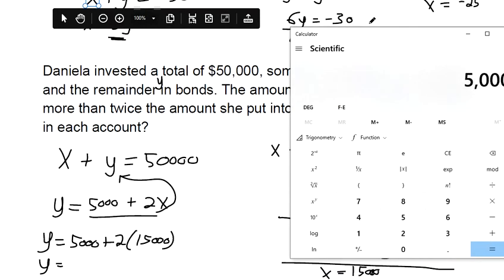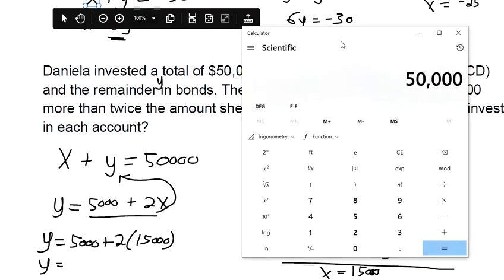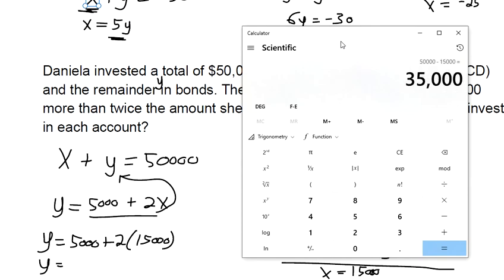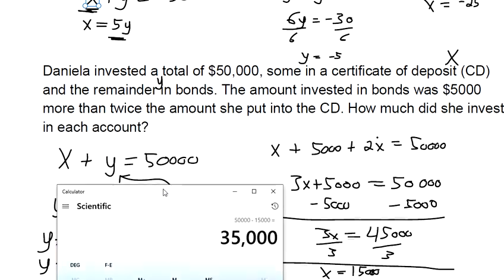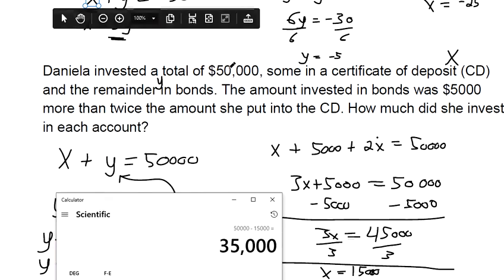There's $50,000 total. We've already used up 15,000 in it. So there's $35,000 in the y account in the bonds. Because if x is $15,000, and if there's only $50,000 total, that means there's $35,000 in y in the bonds.